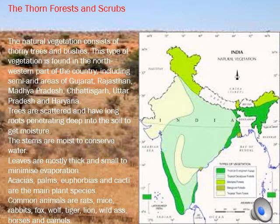The next type is thorn forest or scrub forest, shown as the yellow part on the map. These are also called desert forest or semi-desert forest, found in areas where rainfall is less than 70 centimeters. Mostly thorny bushes and babul grow here. Trees have long roots penetrating deep into the soil to get moisture. Stems are succulent to conserve water, and leaves are thick and small to minimize evaporation. Animals found here are rats, mice, rabbits, wolves, tigers, lions, foxes, wild horses, and camels.